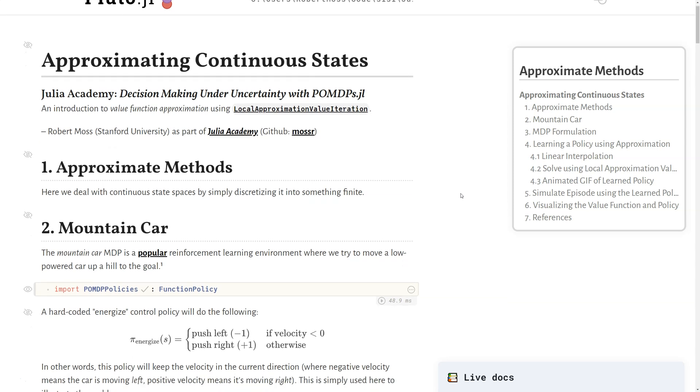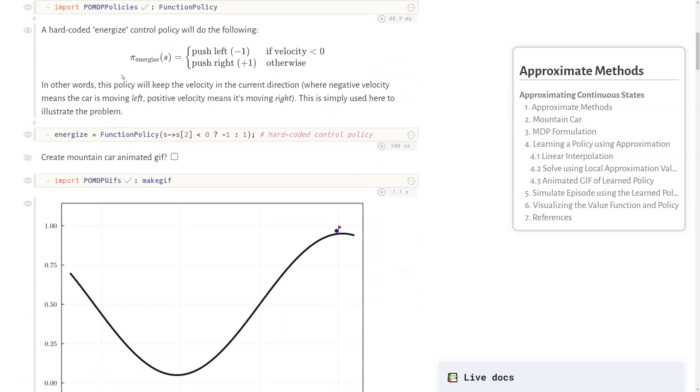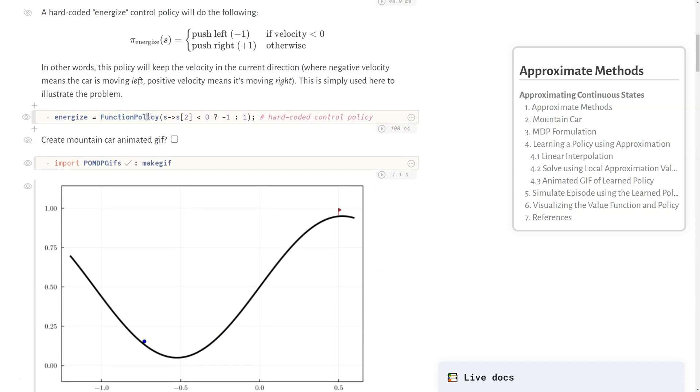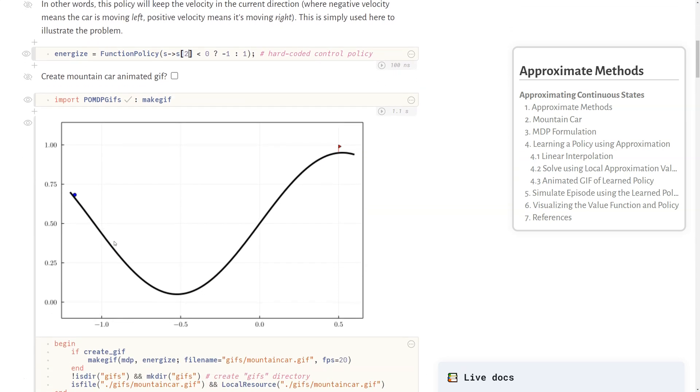A classic problem called the mountain car problem is popular in the reinforcement learning environments where we try to move a low-powered car up a hill to a goal. Here we'll use the POMDP policies package to create some hard-coded control policy that says if the velocity is negative then push left, if the velocity is positive then push right. We can see a gif of that hard-coded policy here where we want to get the agent up the hill to the goal using momentum.